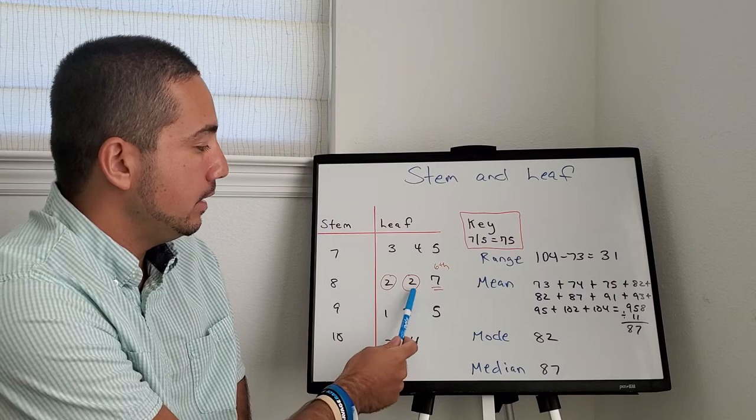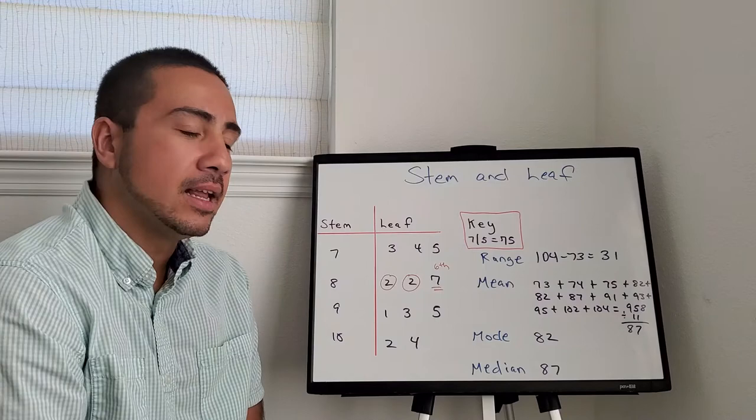Mode, mode, which number repeats the most? You see it right here. Same number, 8, 2, and 2, 82. That's your mode.